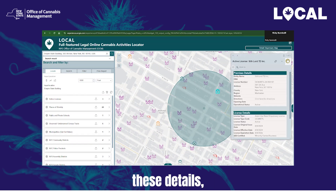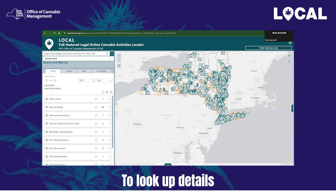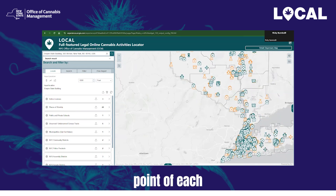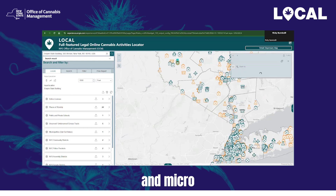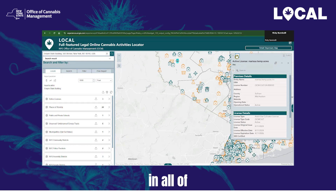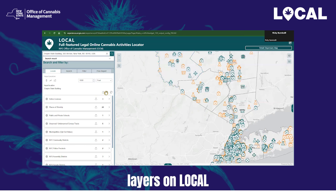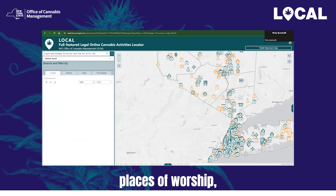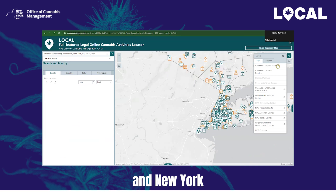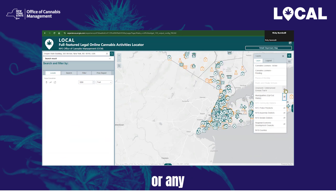You may also interact with the icons on the map to display licensee details. Please note that cultivators and micro-businesses with cultivation and no retail have had their operating addresses redacted. To look up details on these records, find the icon in the center point of each county boundary to cycle through the cultivators and micro-businesses located within that county. The default enabled layers on Local are active licensees, pending licensees, places of worship, public and private schools, New York City community districts, and New York State counties. Remember to open your layer panel and toggle the layers you would like to see or hide. If you wish to export the results of the address search, click the icon with an upward-pointing arrow — you can do this for all layers at once or any individual layer.